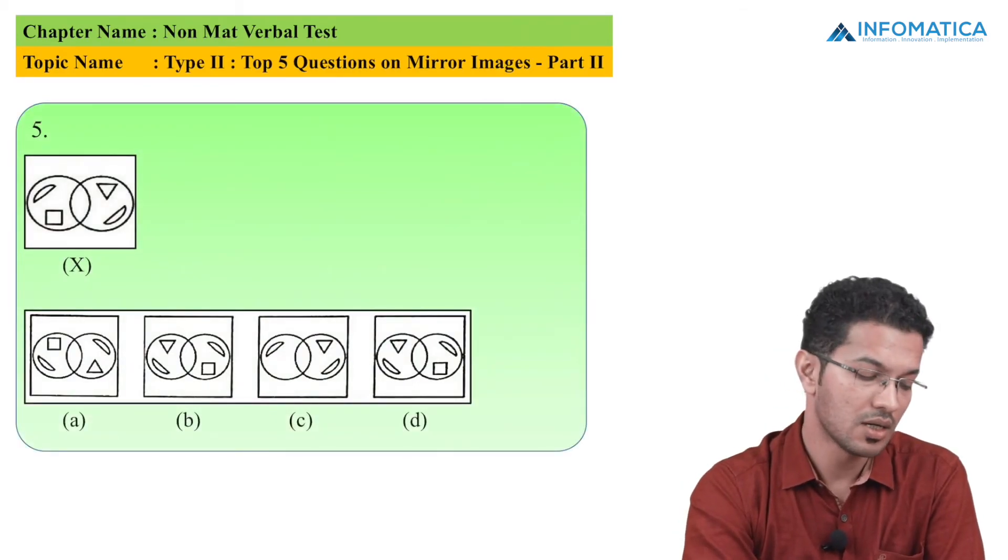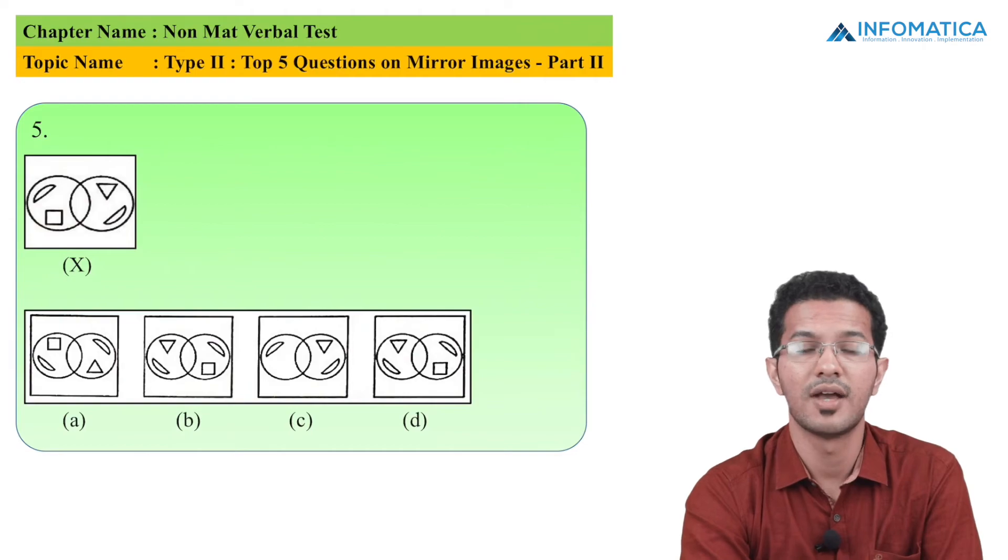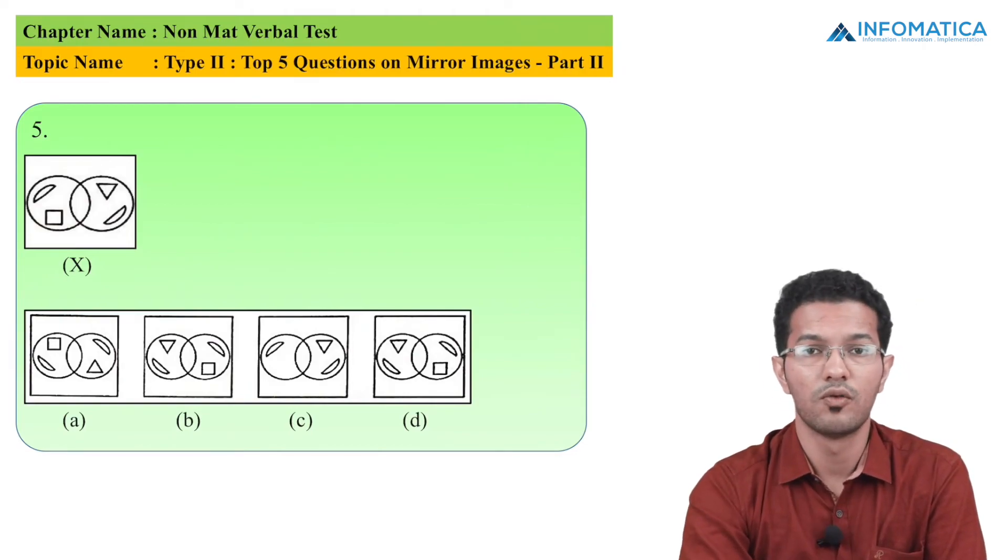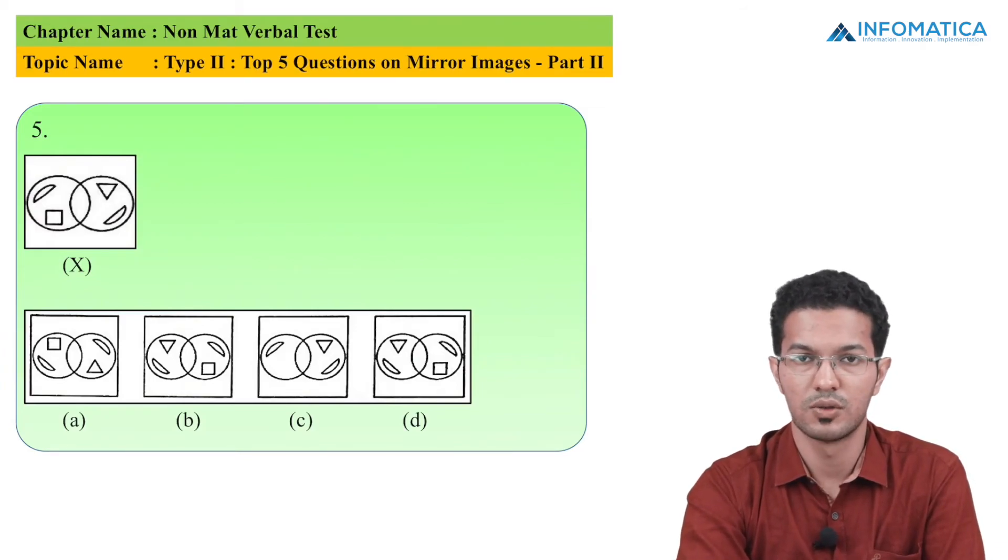And now for the last MCQ, here we have been given a square and we are having two circles with some intersection. So let me go for the two circles first and draw the solution.